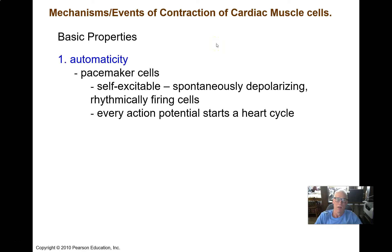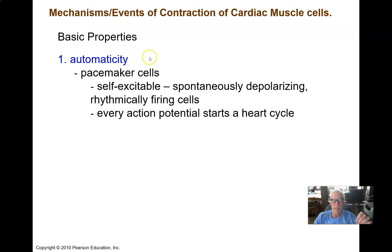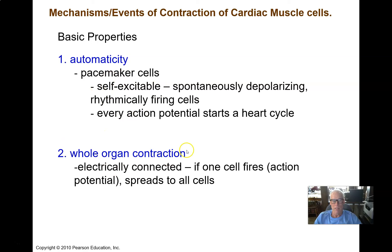Basic properties of the heart: automaticity. There are pacemaker cells — not the same as muscle cells, but a different type called pacemaker cells that just spontaneously depolarize. Their membrane potential is not steady; it continually depolarizes until it reaches threshold, there's an action potential and repolarization, then the whole thing repeats. These cells just rhythmically, periodically have action potentials, and because of the gap junctions, those action potentials spread to the muscle cells throughout the entire heart, and the whole organ contracts as a unit.